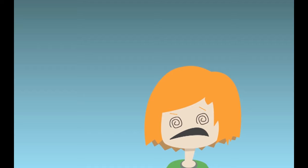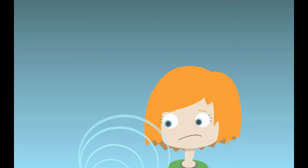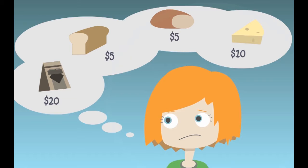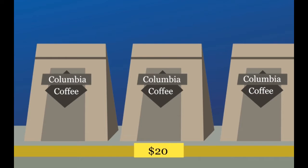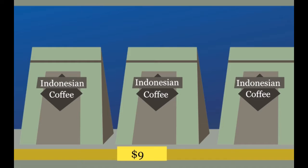The increased price sends her a signal that prompts her to make an informed decision. She can pay $20 for her favorite Colombian coffee, but the higher price means she'll have to give up more of something else to buy it. In fact, Sarah is likely to voluntarily choose to buy another type of coffee — perhaps Indonesian coffee — at a lower price of $9.